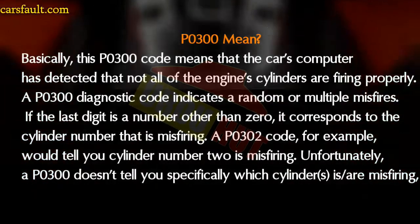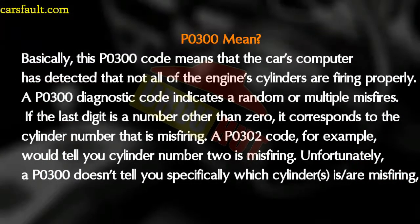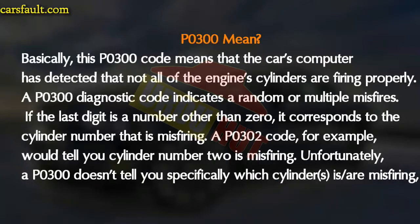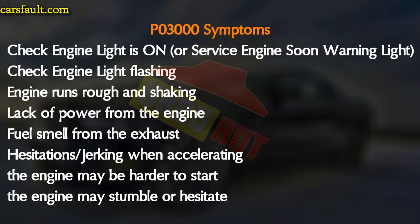A P0300 diagnostic code indicates a random or multiple misfire. If the last digit is a number other than zero, it corresponds to the cylinder number that is misfiring. A P0302 code, for example, will tell you cylinder number two is misfiring. Unfortunately, a P0300 does not tell you specifically which cylinder is misfiring.